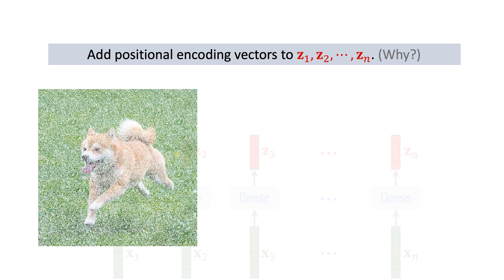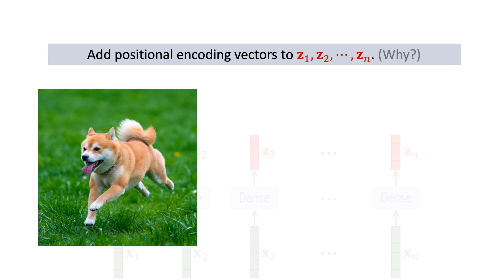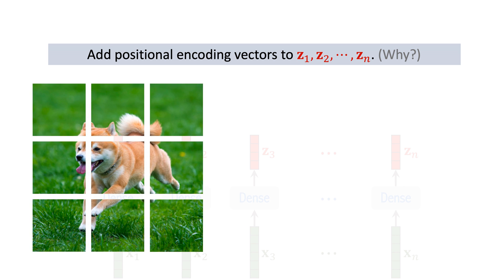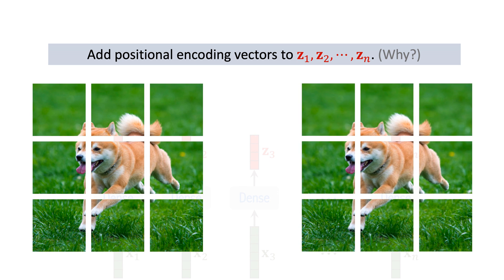I'd like to explain why positional encoding is necessary. Look at this image. We partition the image into 9 patches. Here is a copy of the image.